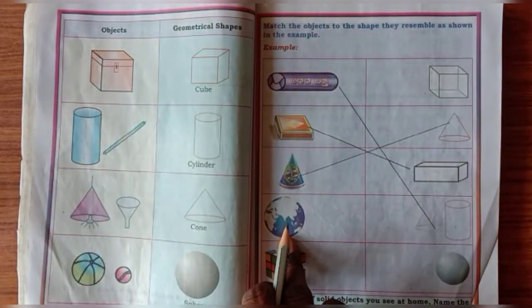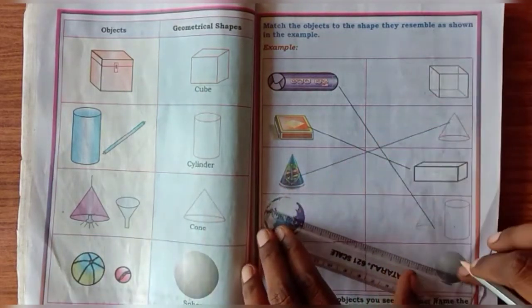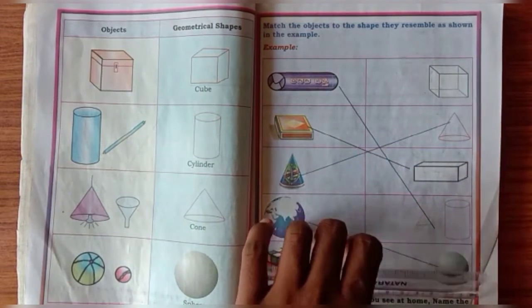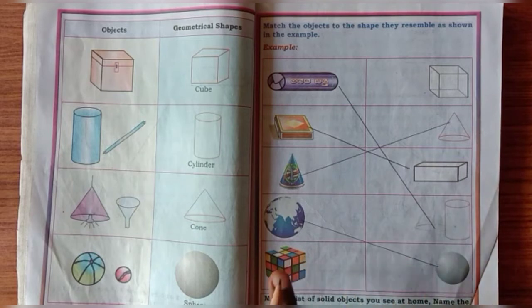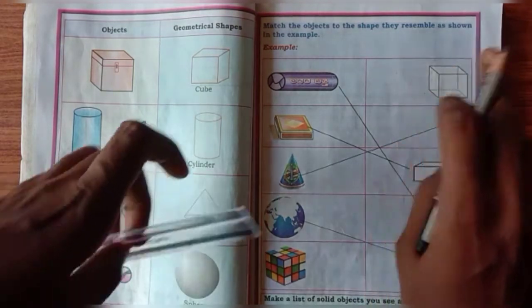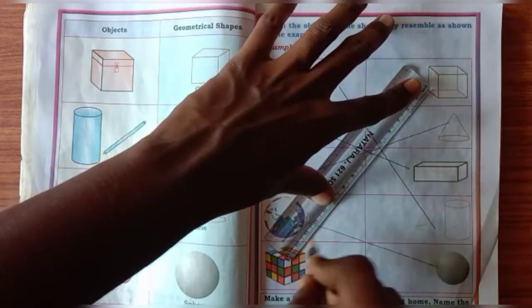Next, globe. This globe with geometrical shape is sphere. Here it is there. You have to correctly match it. Next, this one box with geometrical shape is here. You have to correctly match it.